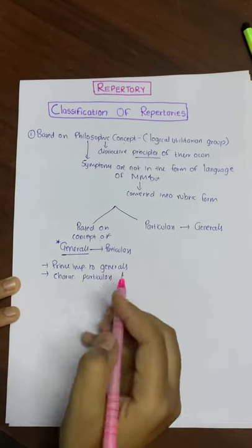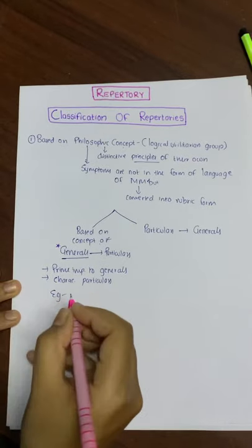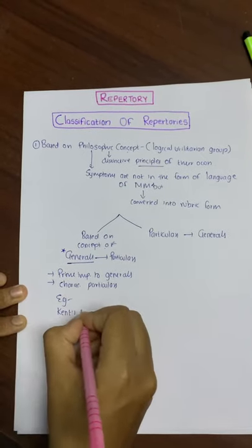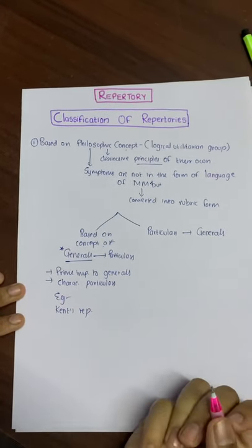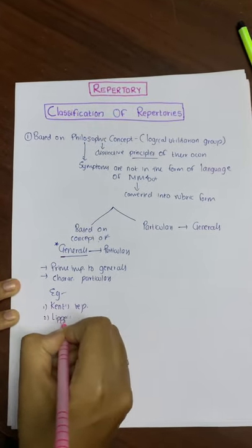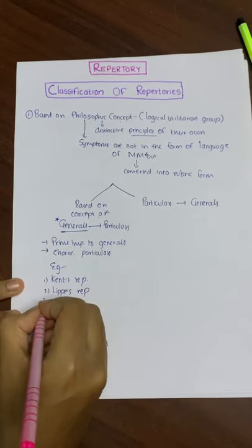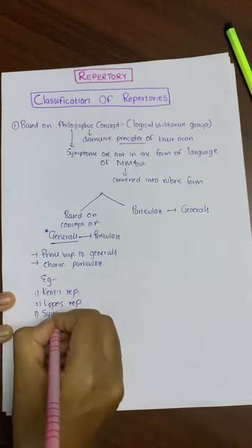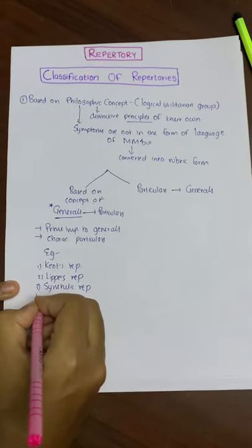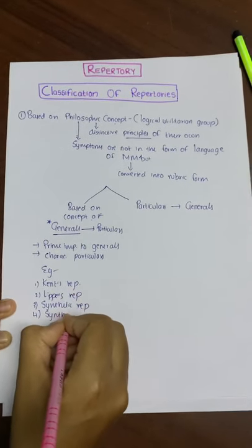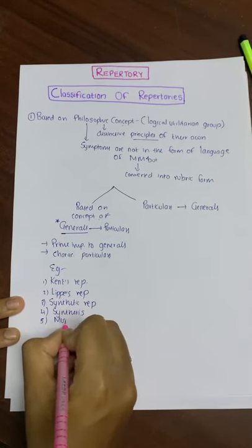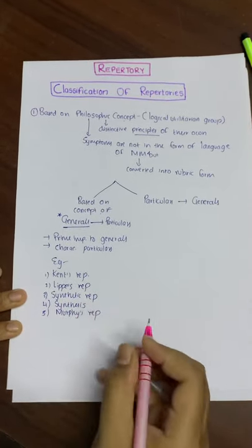Which repertories give more importance to generals? The most famous example is Kent's Repertory — that is the Repertory of Homeopathic Materia Medica — Lippe's Repertory, Synthetic Repertory by Barthal and Klunker, Synthesis, and Murphy's Repertory.